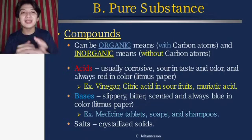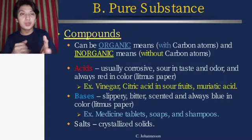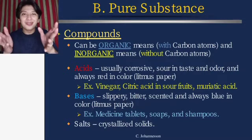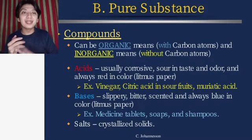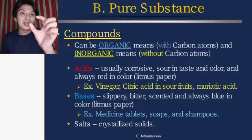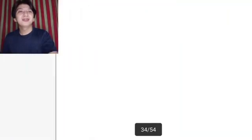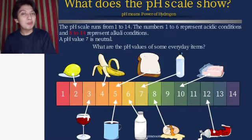Salts are crystallized solids — like rock salt, which is made of crystals. Examples of acids include vinegar, citric acid found in sour fruits, and muriatic acid. You can usually identify an acid because it has the word 'acid' in its name. Examples of bases include medicine tablets, soaps, and shampoos — that's why soaps and shampoos taste bitter.